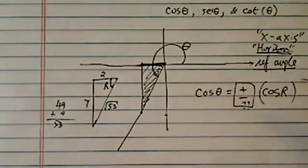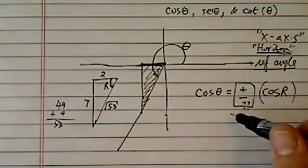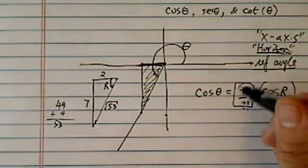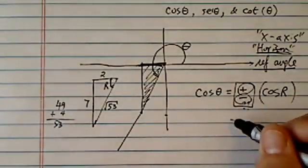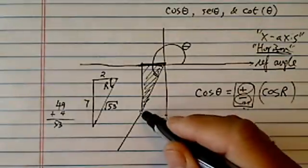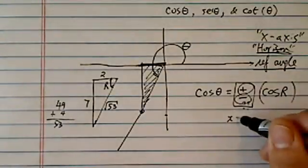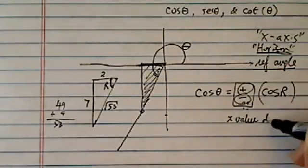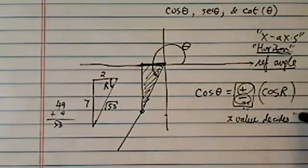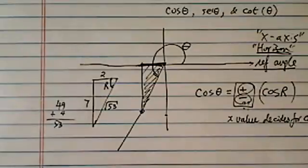Earlier, I hinted at the shortcut for you to memorize how to pick the plus or minus. X value at the terminating angle, x value decides for cosine R. So if cosine is, for cosine theta.